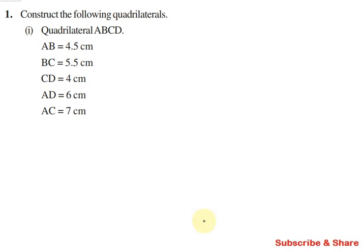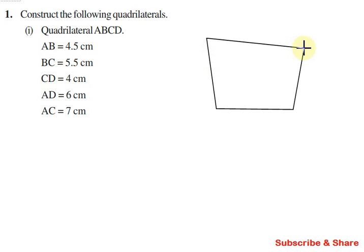What we normally do is draw a rough diagram. So if we draw a rough diagram, we draw an uneven shape — it is not necessarily a square or rectangle. I just draw a rough diagram. Here, we have to mark the given points: quadrilateral A, B, C, D. So I mark A, B, C, D.